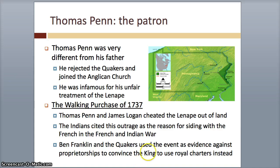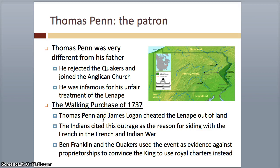Instead of people just going out and making their own deals and cheating, they tried to say only the king — essentially only the president — can have the power to take over the land and the people. What happened was Thomas Penn and James Logan made this deal. They went to the Indians and said, give me the area — the distance a man can walk in a day and a half. The Indians thought that was easy, not that much. But then what they did is they hired three runners to walk the distance. It turned out the land was much farther and longer than the Indians thought it would be — that's how they cheated.